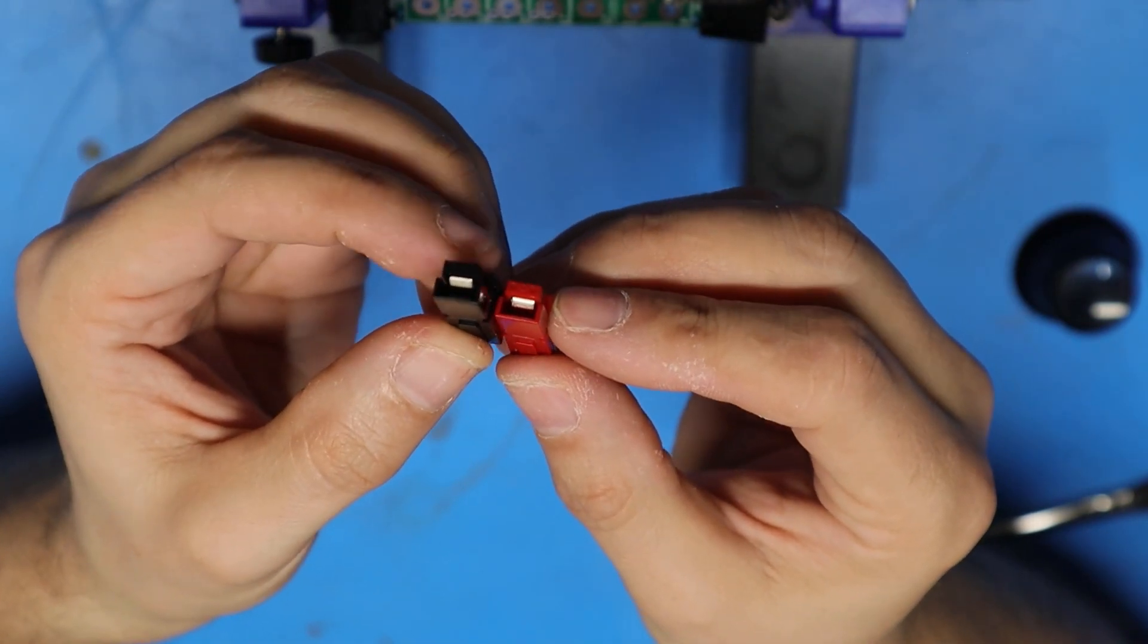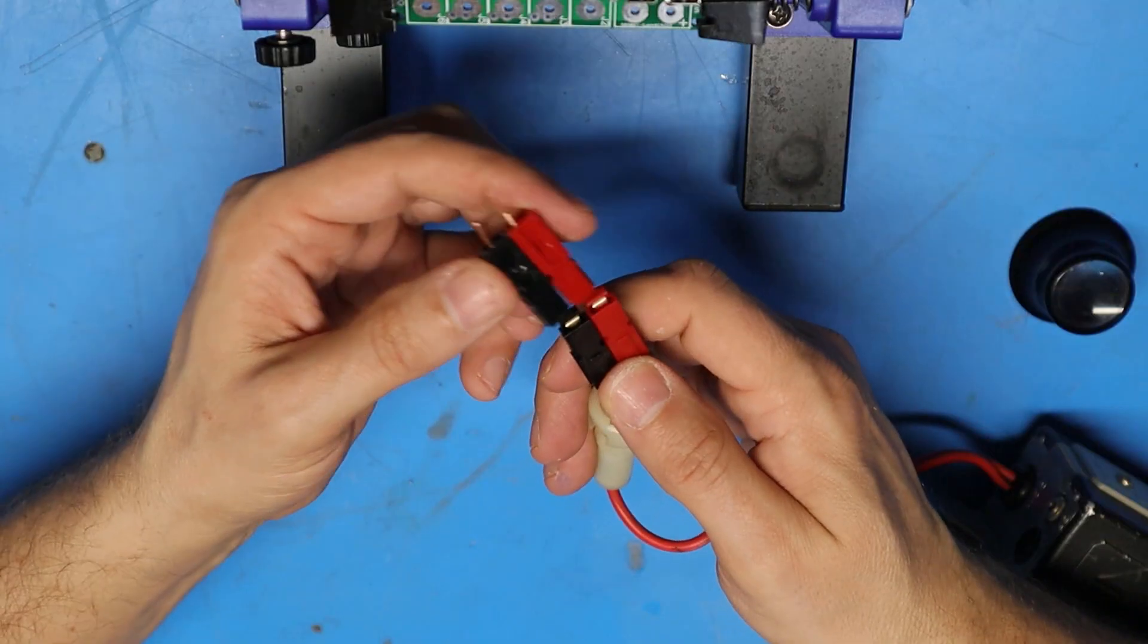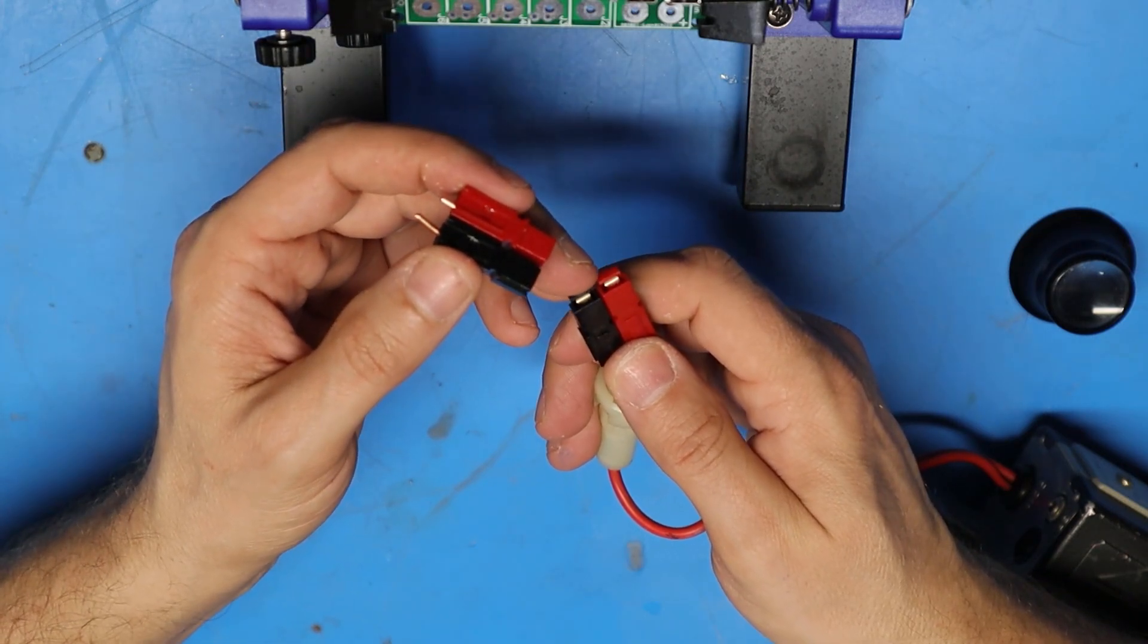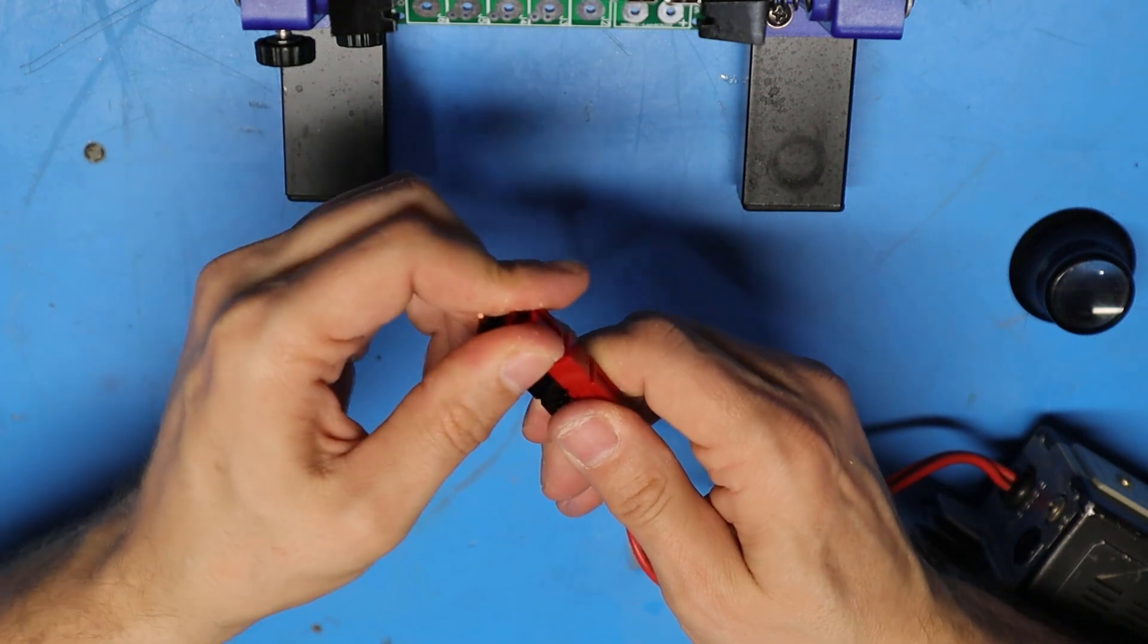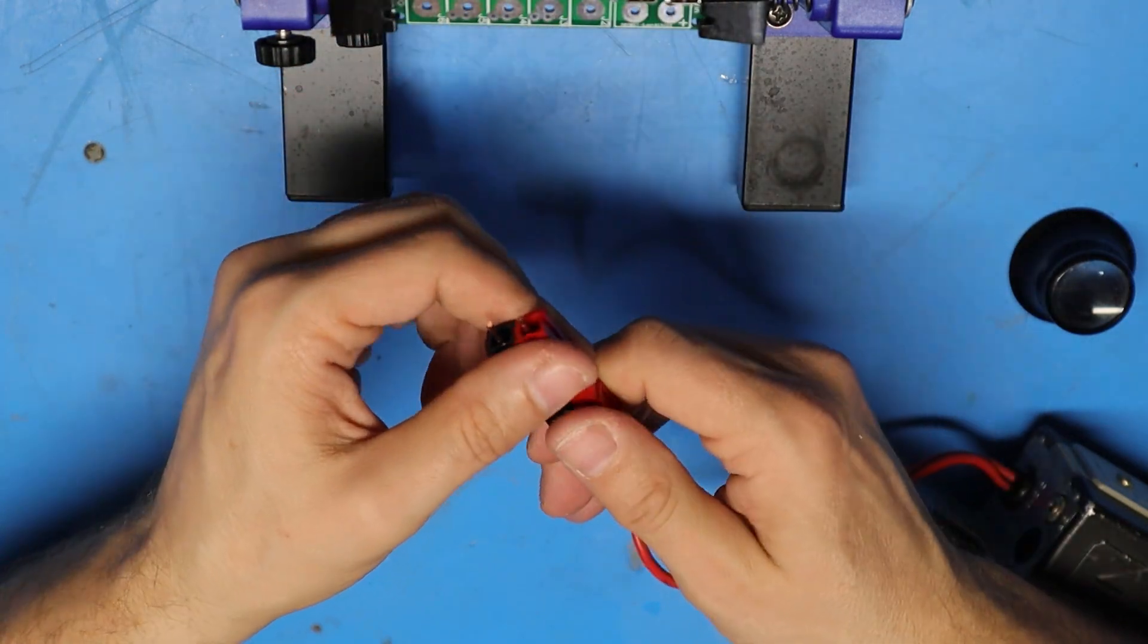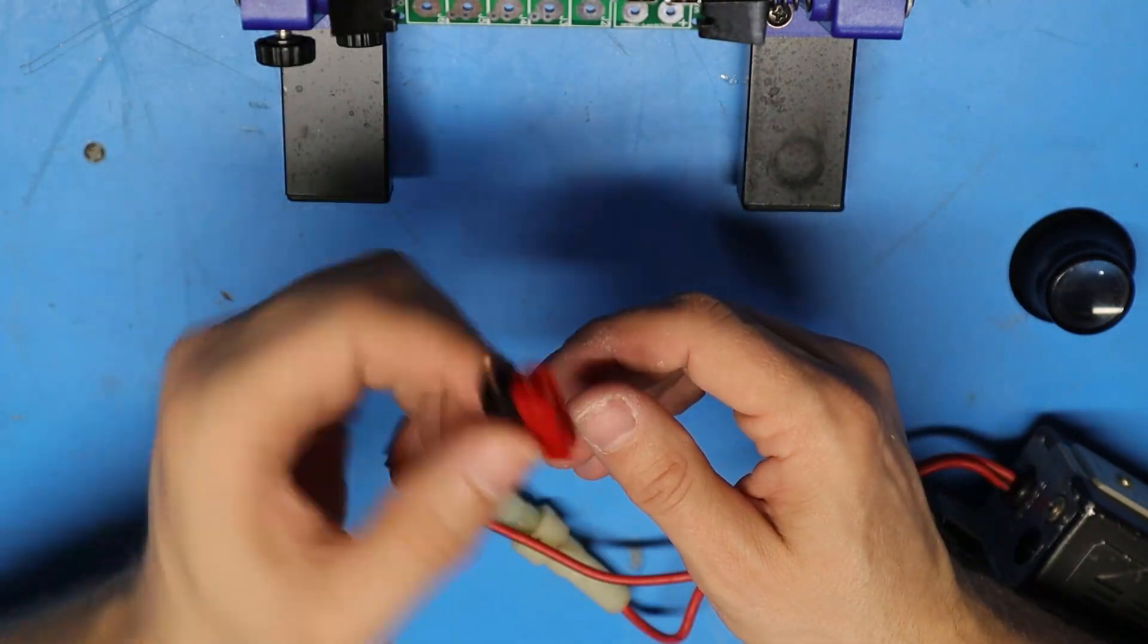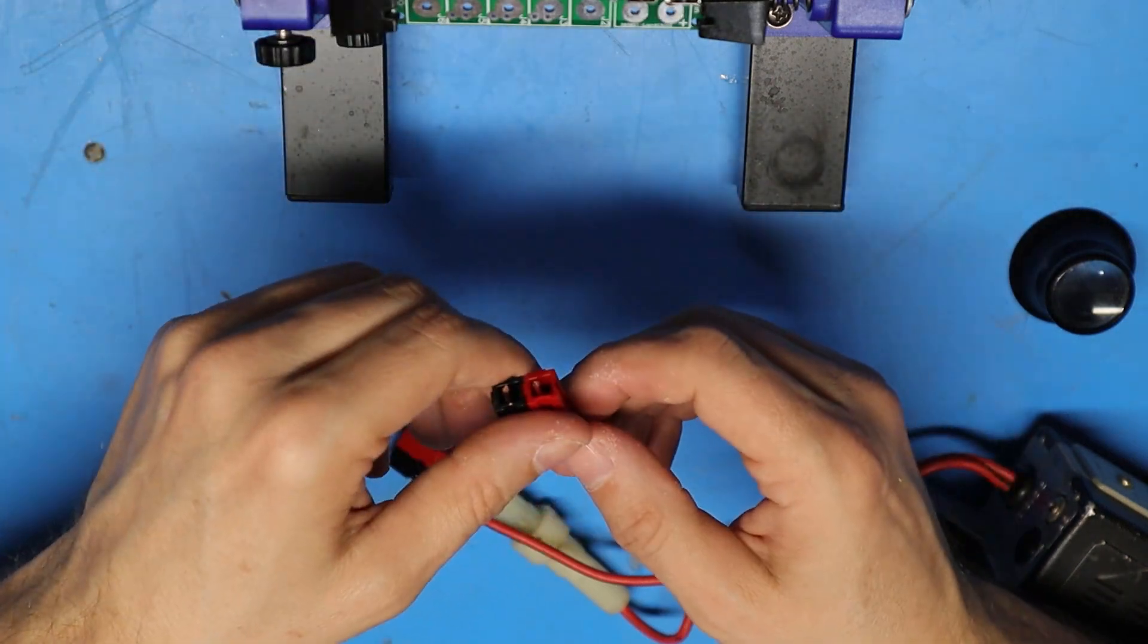Now to double check and make sure I've got these oriented correctly, I'm going to plug them into a known good set of power poles and you can see I should be good to go. Now I'll do the same thing for the other five pairs.